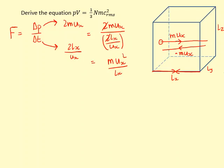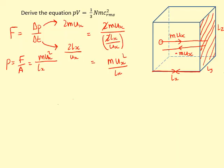For pressure, which is force over area, the area the particle is colliding with is the whole side — that's ly times lz. So pressure is mux² over lx, divided by ly·lz. Since lx·ly·lz is the volume, this simplifies to mux² over volume. This is the pressure due to one particle, so we add a subscript one, then multiply by N particles to get the total pressure from all particles in the container.